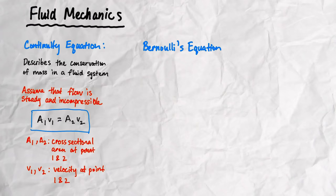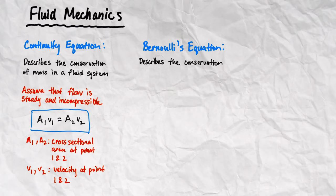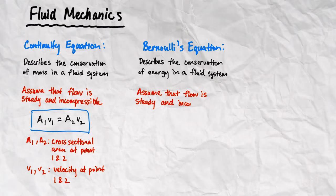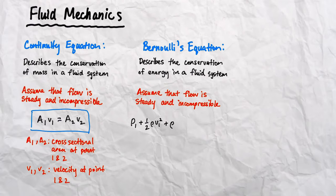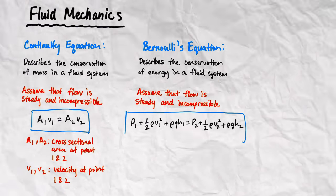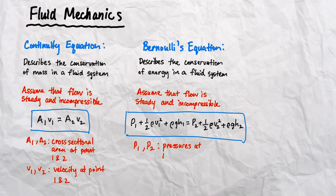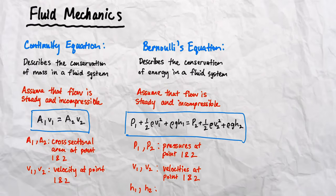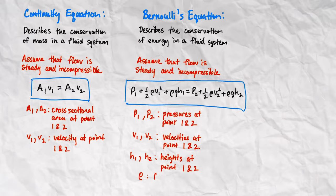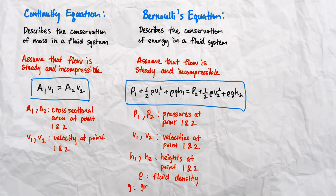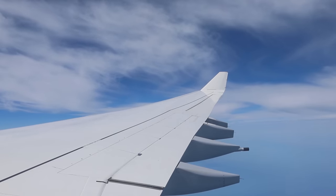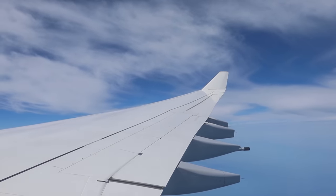Second, you should know about Bernoulli's equation that describes the conservation of energy for a fluid. Assuming that the flow is steady and incompressible, we can apply the equation to a single streamline in a fluid, where P1 and P2 are pressures at points 1 and 2, V1 and V2 are velocities at points 1 and 2, and H is the height at points 1 and 2. Rho is the fluid density, and G is the gravitational acceleration. This equation can be used to analyze flow across an aircraft wing.